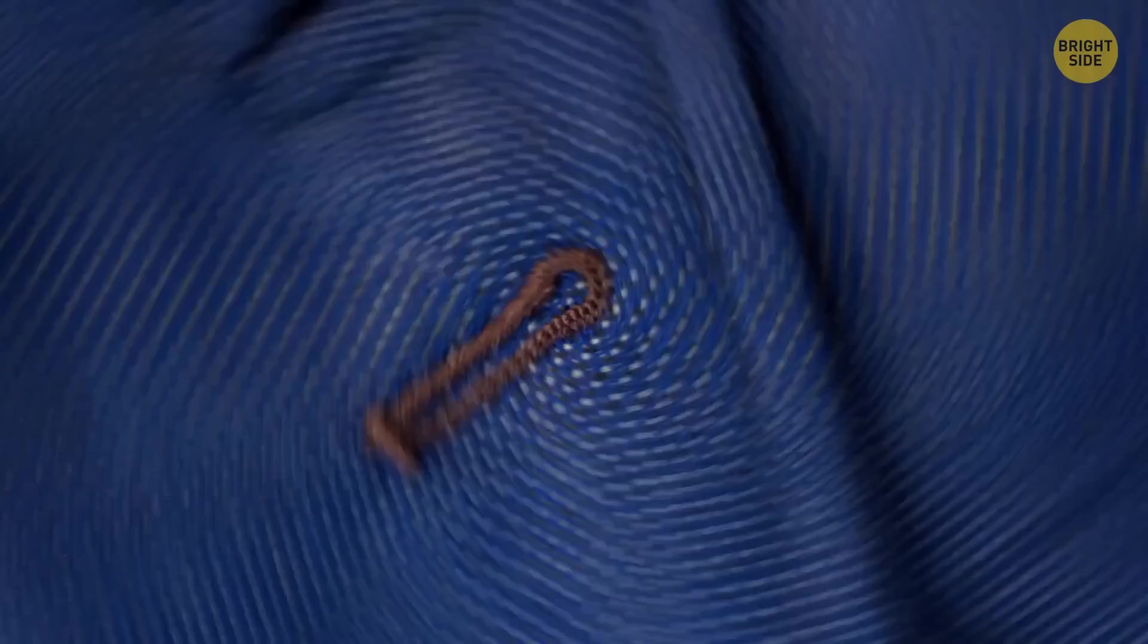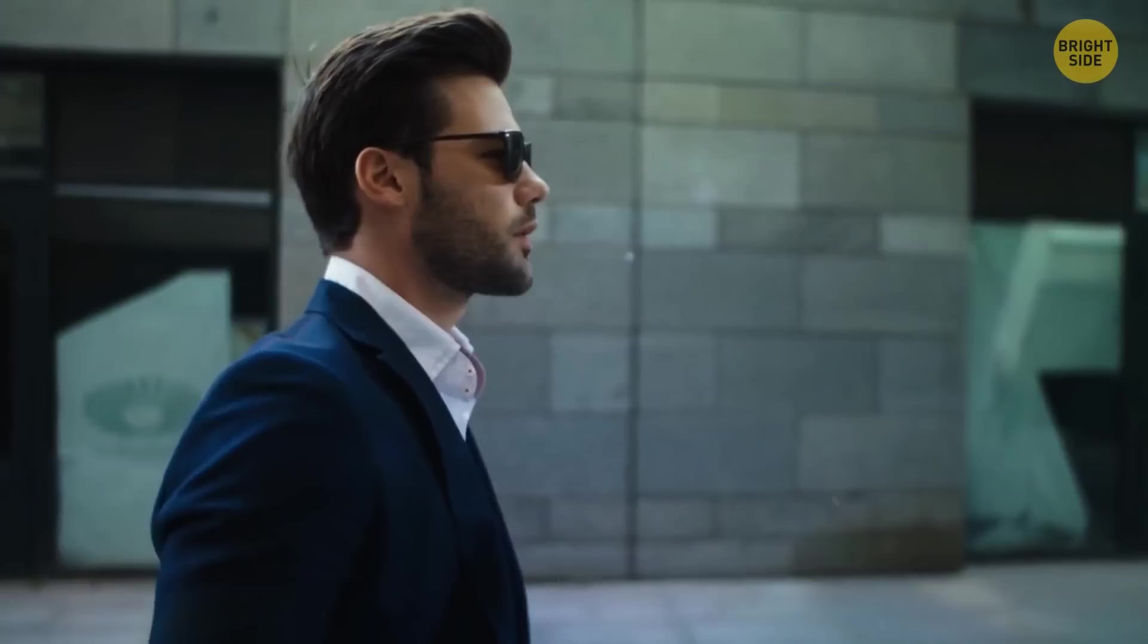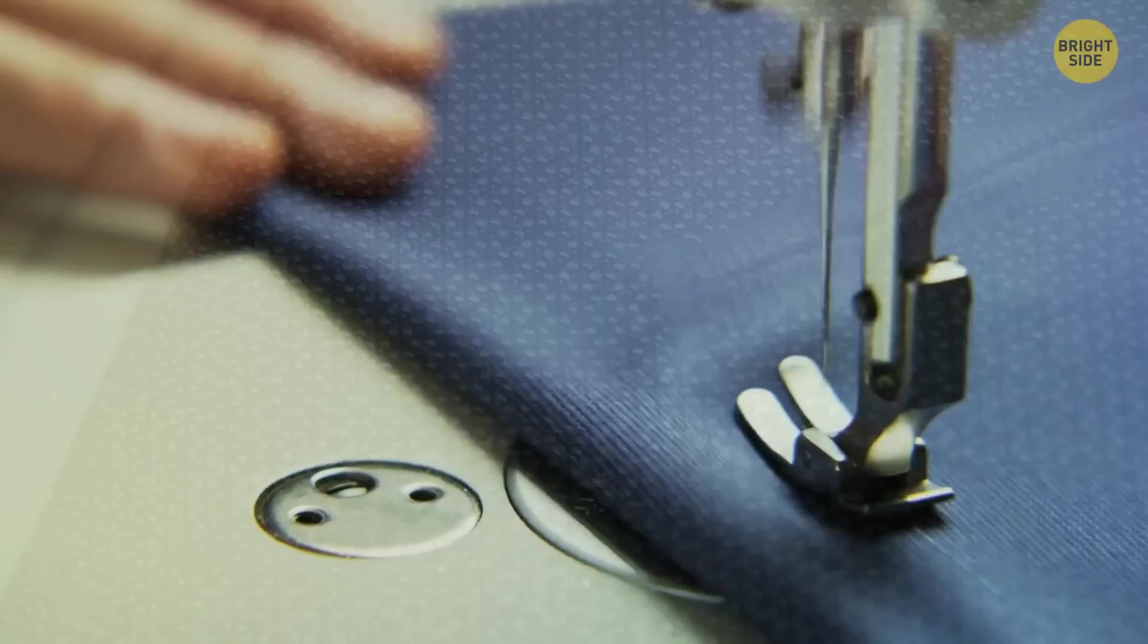Why does a lapel have a buttonhole with no matching button? Originally, coats and jackets did have a corresponding button so that the wearer could turn up the collar and fasten it around the neck to keep warm. Over time, people stopped doing this and the button was removed. But many suit makers still keep the non-functioning traditional buttonhole.